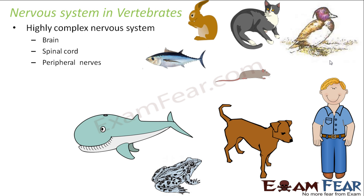The nervous system of vertebrates consists of different parts: a highly advanced and complex brain, something called a spinal cord, and some peripheral nerves. In human beings it is called the spinal cord, while other vertebrates have a vertebral cord. Overall, the nervous system in vertebrates is very complex.